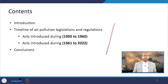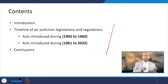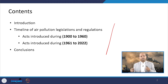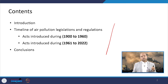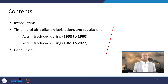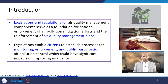Then we'll cover the timeline of air pollution legislations and regulations in the context of India — which acts were introduced from 1900 to 1960, and which were enacted during 1961 to 2022. We will see the most important acts and notifications and then conclude.